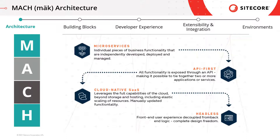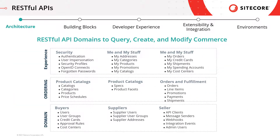MACH architecture gives businesses the freedom to choose from the best tools on the market and maintain a structure that makes it easier to add, replace, or remove those tools in the future. Put simply, MACH architecture allows you to break the replatform cycle once and for all. Sitecore Order Cloud is a cloud-hosted composable e-commerce platform, exposed entirely via a RESTful API. It enables rapid development of custom, secure, and scalable e-commerce solutions.